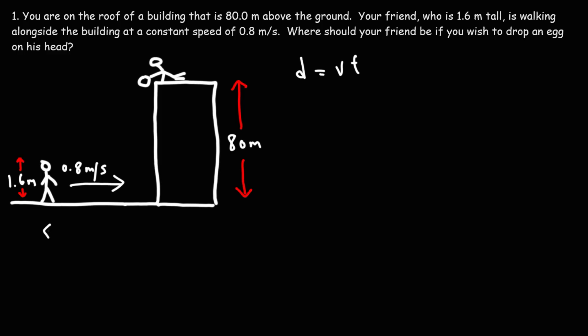Our goal in this problem is to find out how far your friend must be from the building when you release the egg. So the answer for this problem that we're looking for is d, the horizontal distance. We can also call it dx.